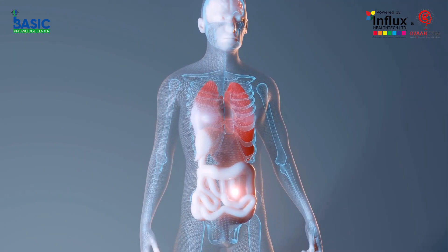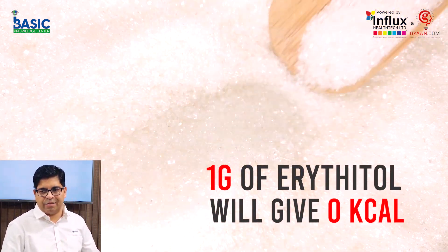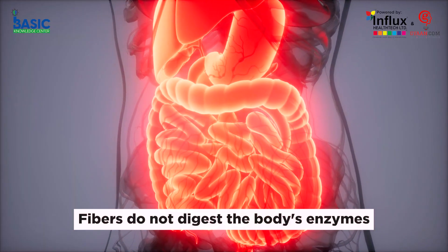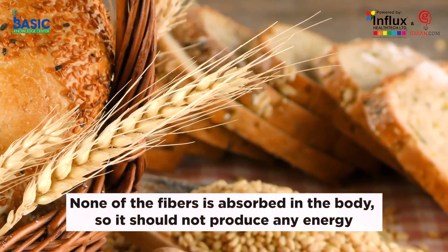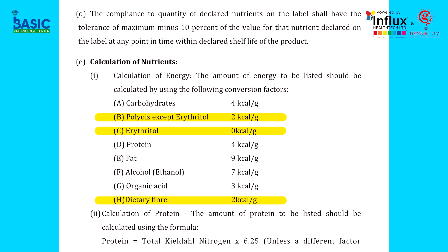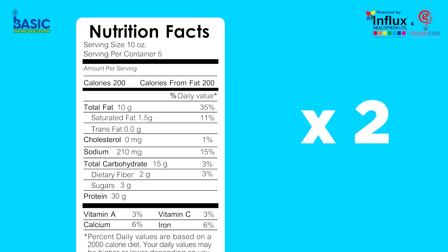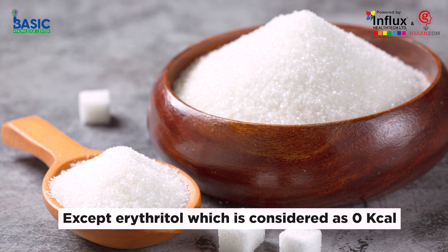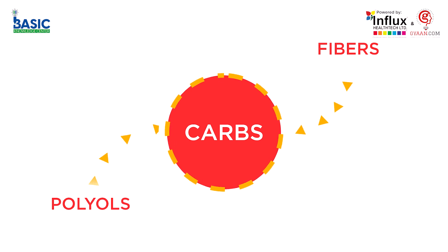Except for erythritol, which does not get completely absorbed in the body — its factor is 0, so 1 gram of erythritol gives 0 kilocalories. Similarly, fibers do not get digested by body enzymes, so technically none of the fiber is absorbed in the body and it should not produce energy. As per FSSAI India, polyols and fibers (except erythritol) produce 2 kilocalories per gram, and erythritol gives 0 kilocalories. Erythritol is generally found in sugar-free supplements.